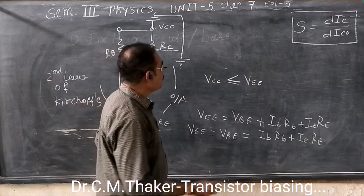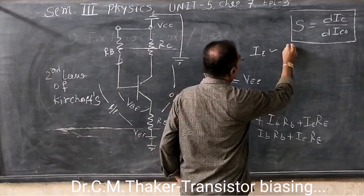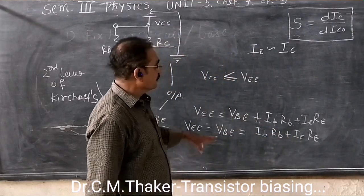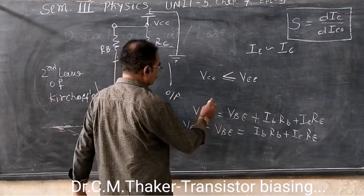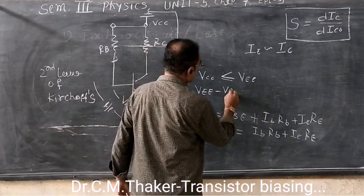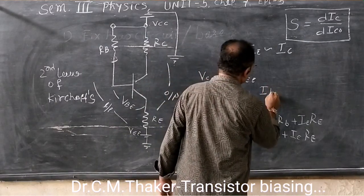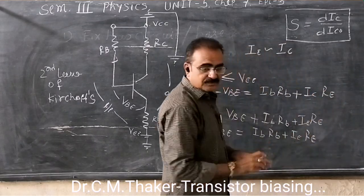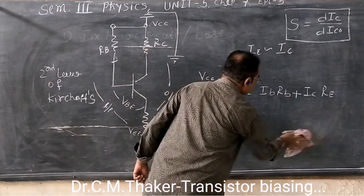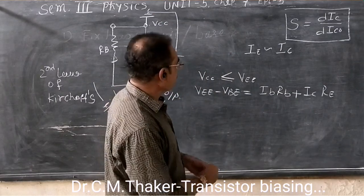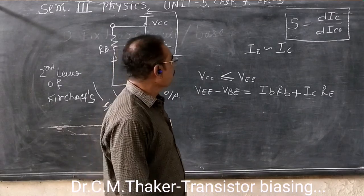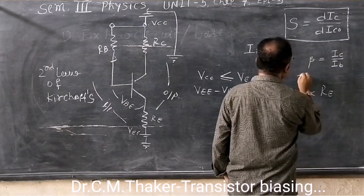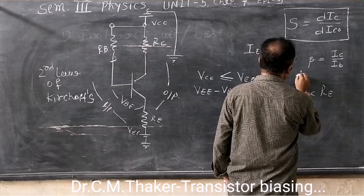As we know, IE almost equal to IC. So I change this equation by IC to IE. Even though base current you can show in terms of IC. Why? Because beta is equal to IC upon IB, and that is why IB equals IC upon beta.